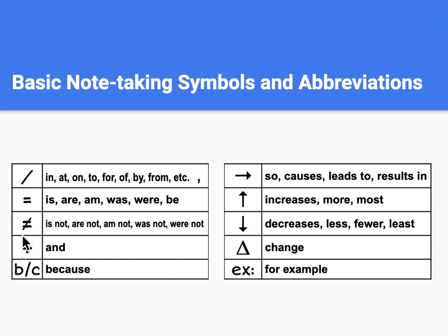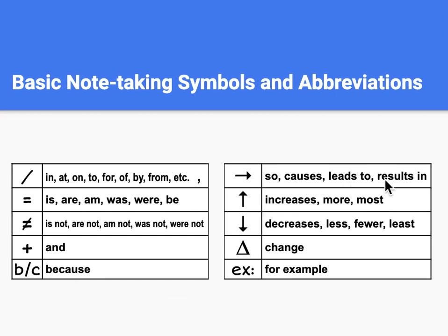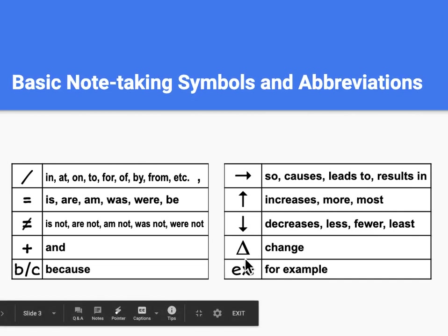We're going to use an equal sign with a slash through it to represent the negative forms of be: is not, are not. We're going to use a plus sign for and, b/c for because, an arrow pointing to the side for so, causes, leads to, results in, an arrow pointing up for increases, more, most, an arrow pointing down for decreases, less, fewer, least, a delta or triangle for change, and EX with a colon for for example.